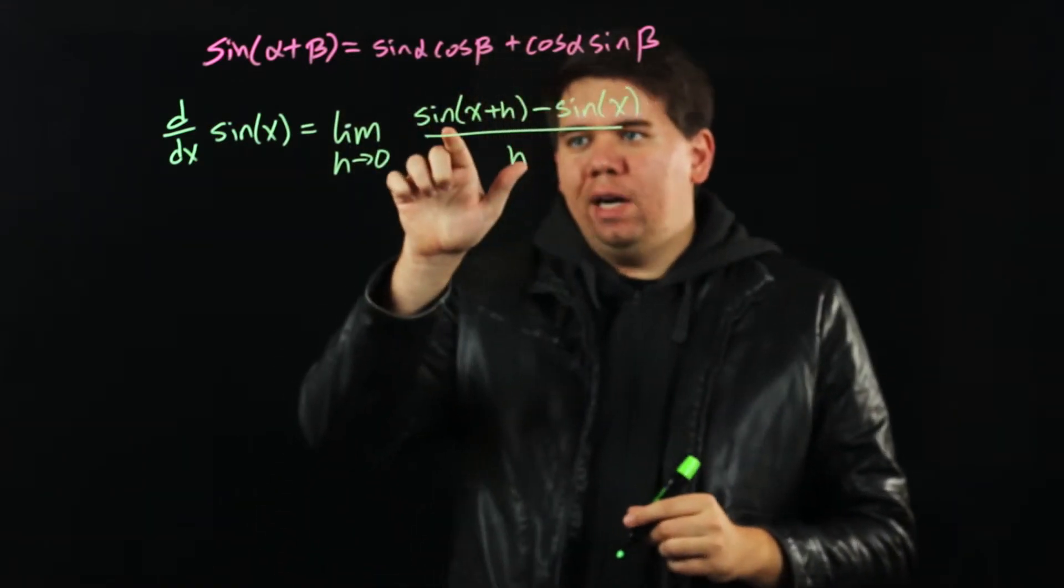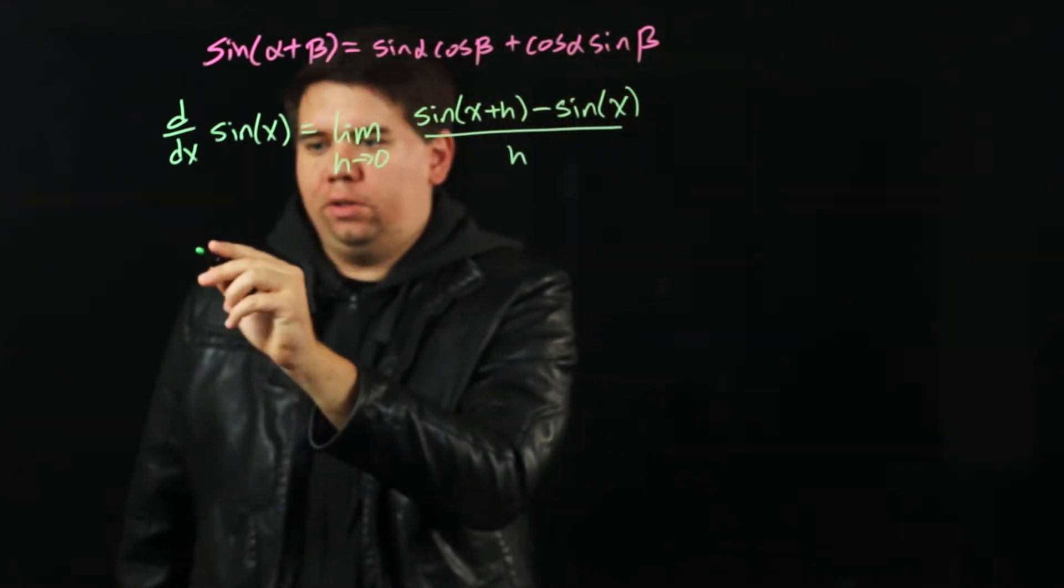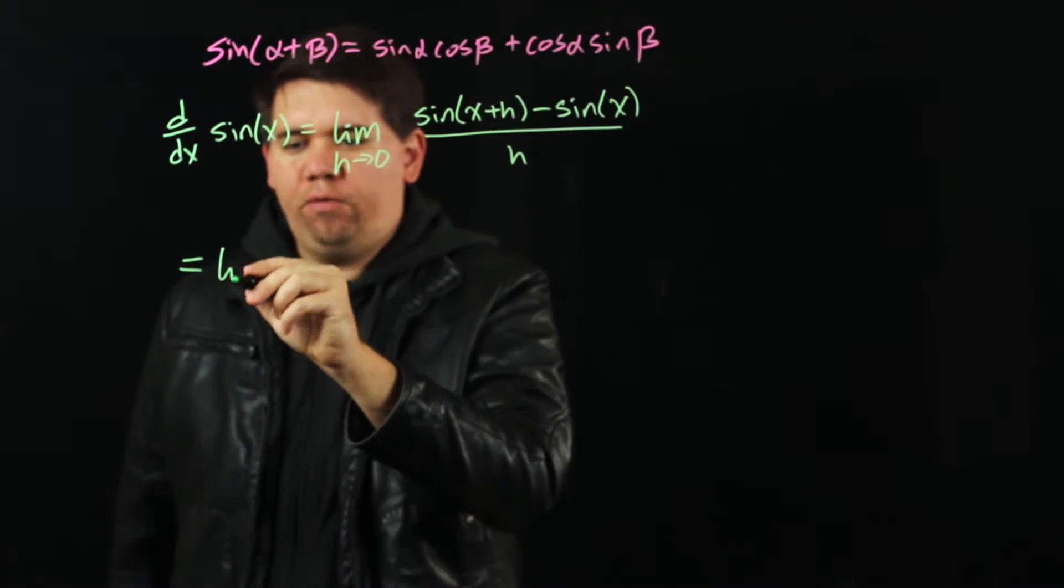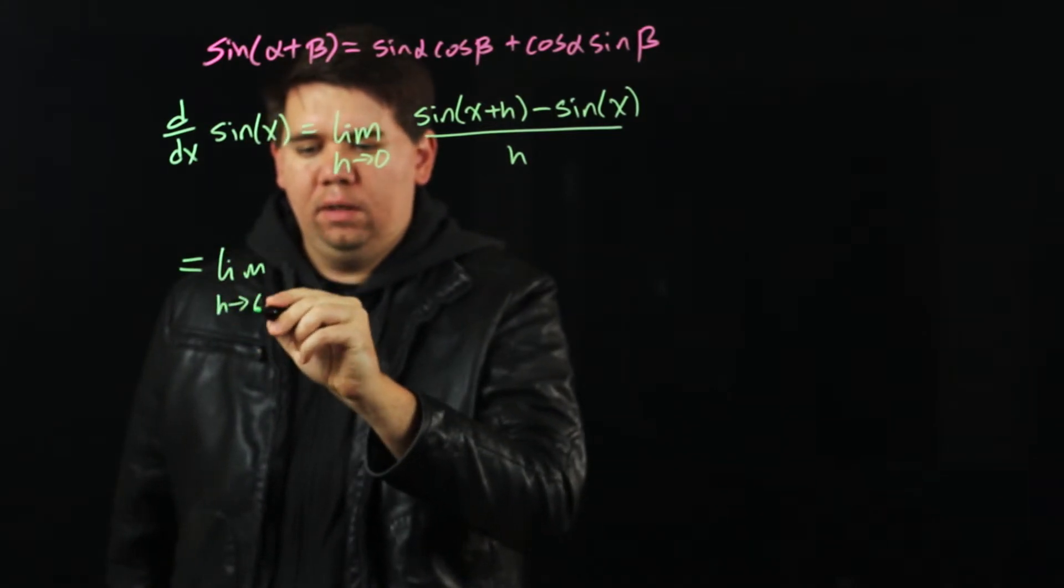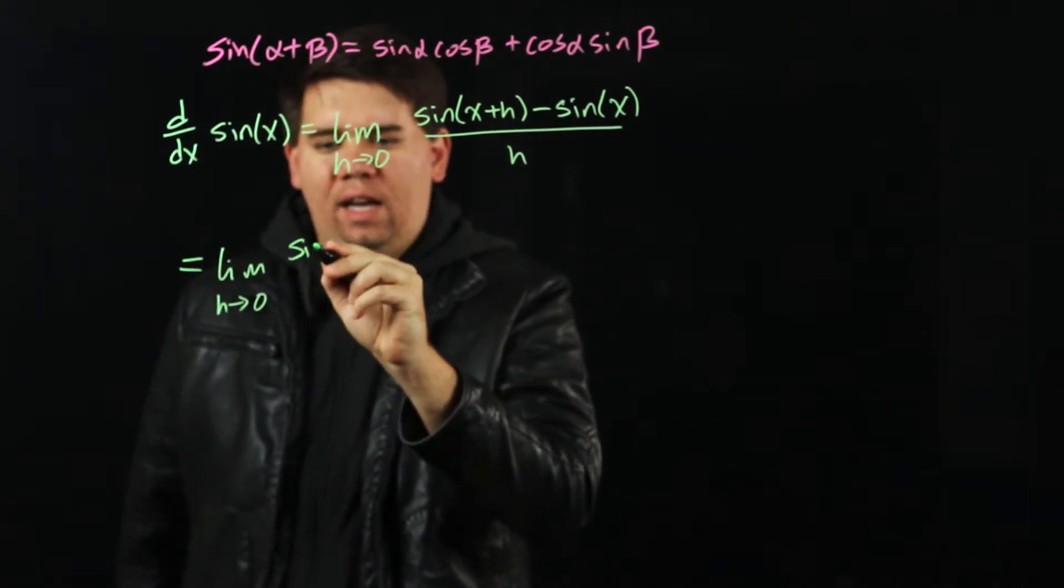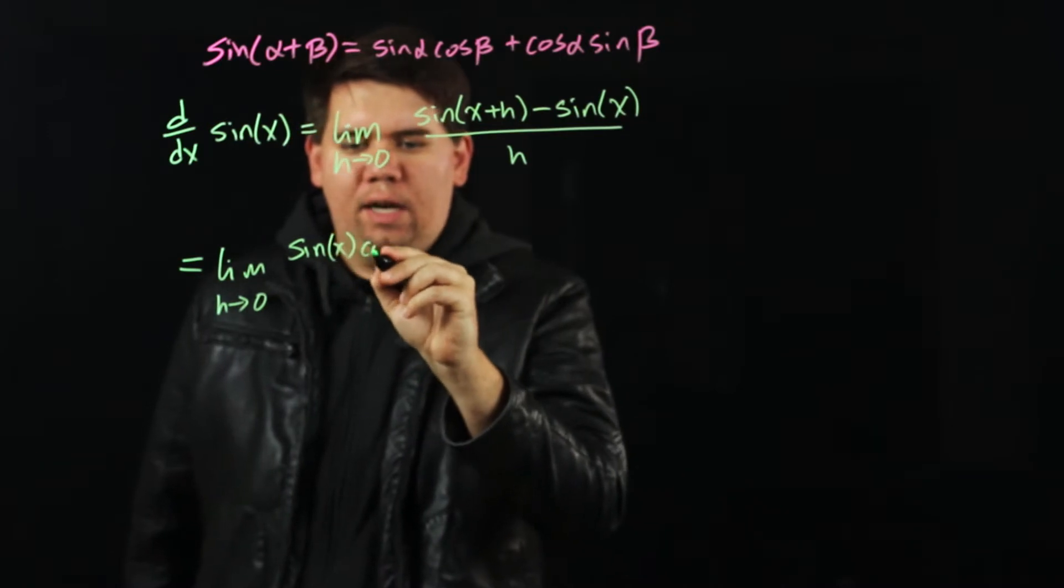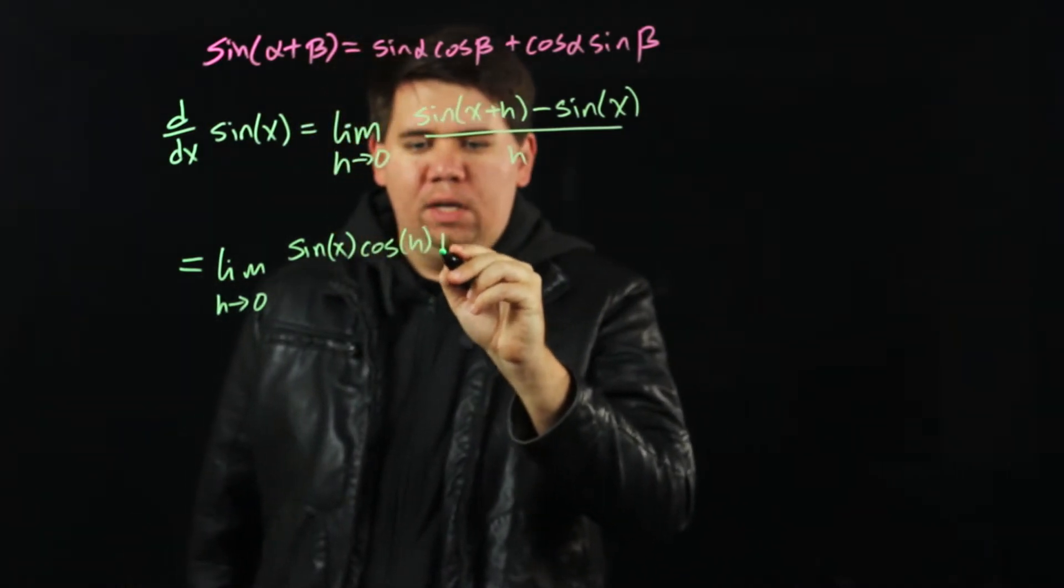So in our case, we can rewrite sine of x plus h using this formula as sine of x times cosine of h plus cosine of x times sine of h.